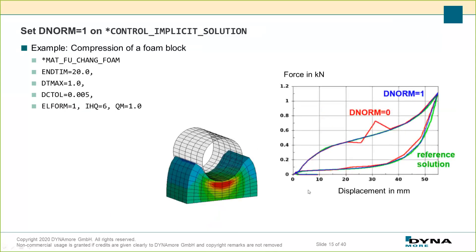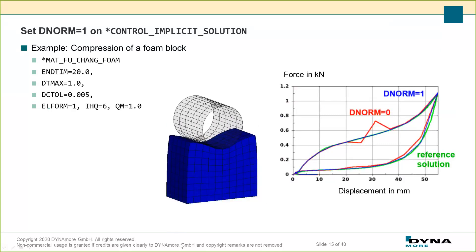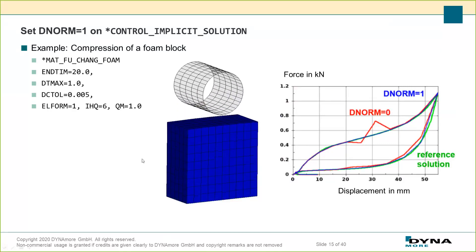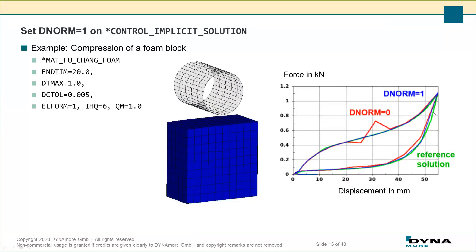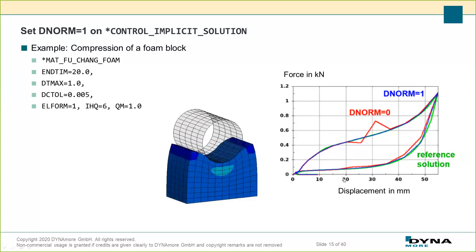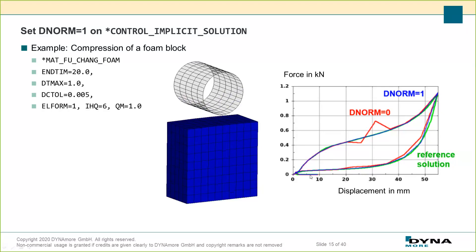Regarding the displacement norm on CONTROL_IMPLICIT_SOLUTION: for example, pushing into a soft foam block modeled with Matzu-lang foam, you get large deformations and the accuracy suffers if you use the standard displacement norm, which always references the initial state. With displacement norm equal to 1, it always references the current state, making the solution more accurate for large deformations.